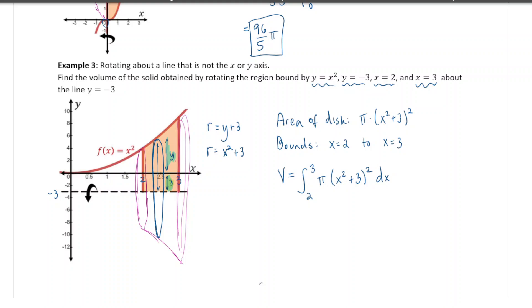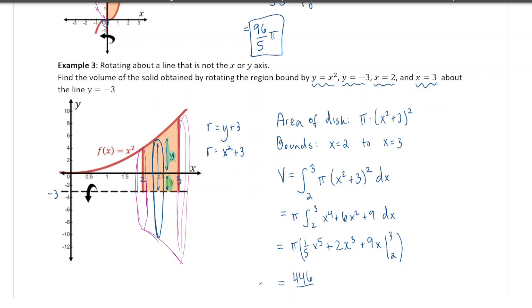To solve this integral, expand the bracket to get x⁴ + 6x² + 9. The anti-derivative is (1/5)x⁵ + 2x³ + 9x, evaluated between 2 and 3. Doing all of that gives 446π/5. That's the final volume.